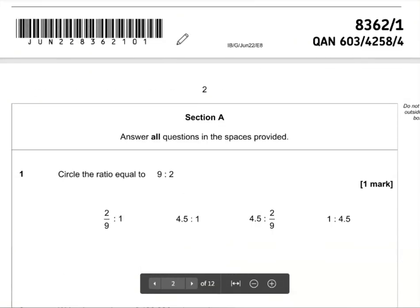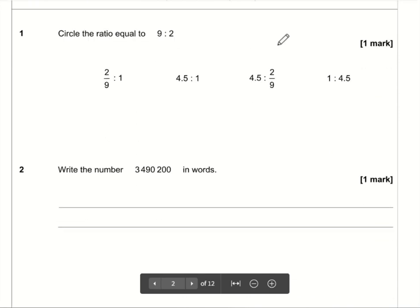So let's have a look at question number one, bit of a nasty one. Circle the ratio equal to 9 to 2. It's just a question of looking through, going through them one at a time.